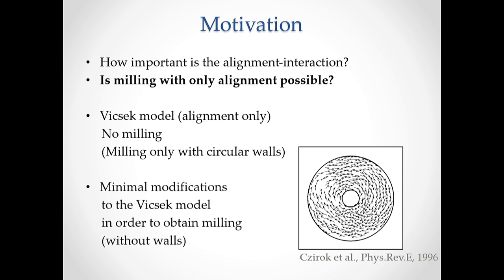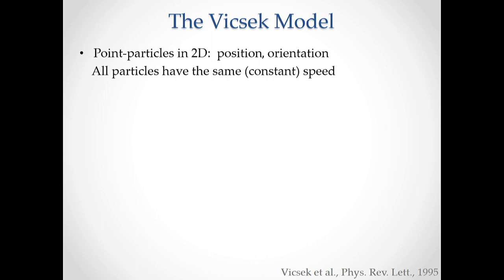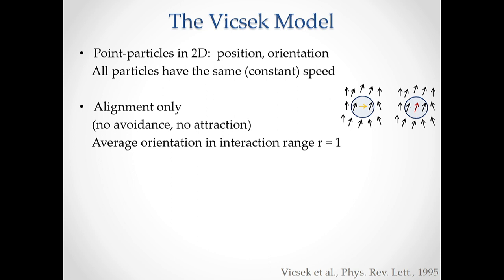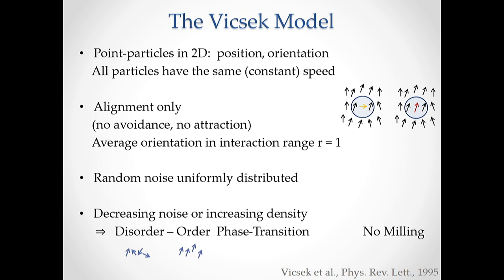So I'm here interested in the minimal modifications which we have to do on the Vicsek model in order to obtain milling without any walls — so, in bulk. As most of you already know, the Vicsek model is a two-dimensional model of point particles characterized by position and orientation, which all have the same constant speed. There is only alignment, no avoidance and attraction, and the particles align to the average orientation of neighbors including themselves in a certain interaction range. There is a random noise and indeed a phase transition from disorder to order, but as I said, no milling.